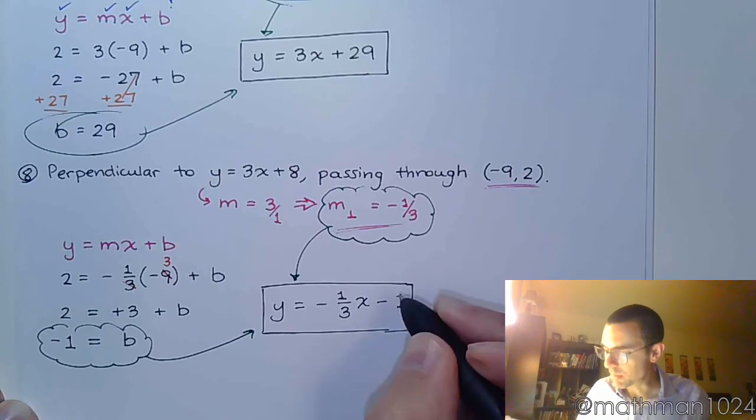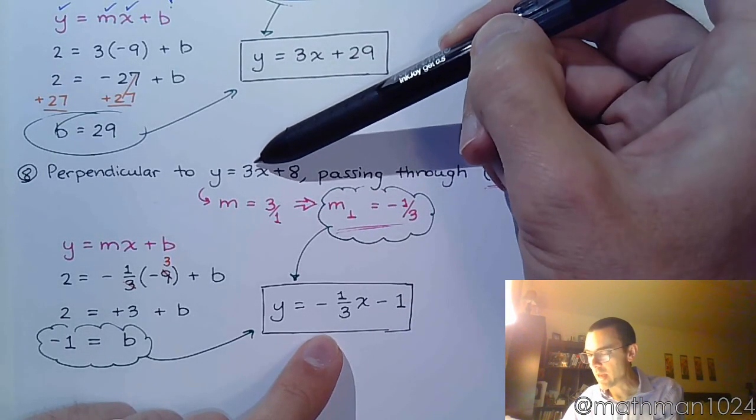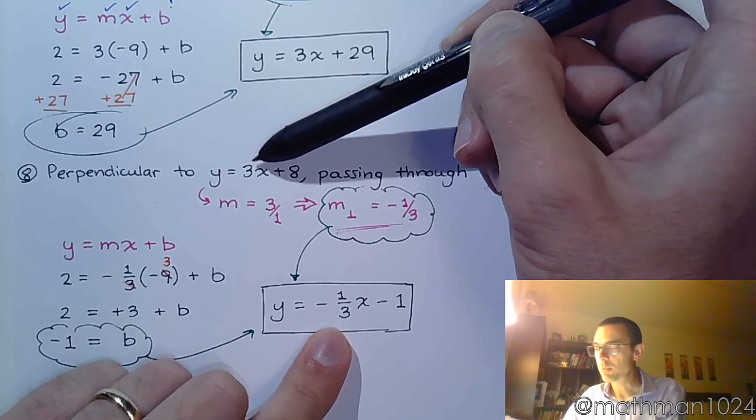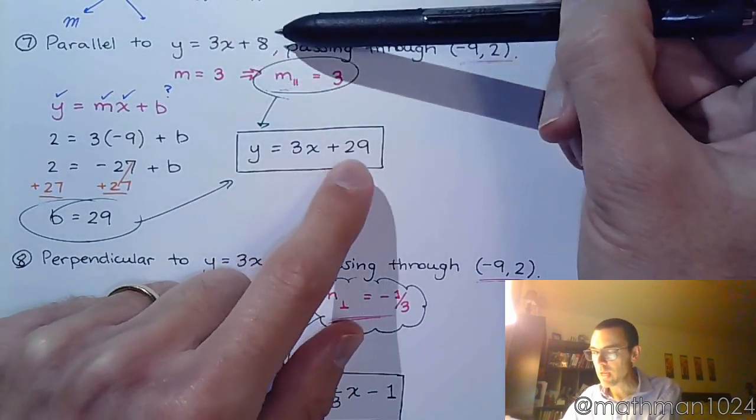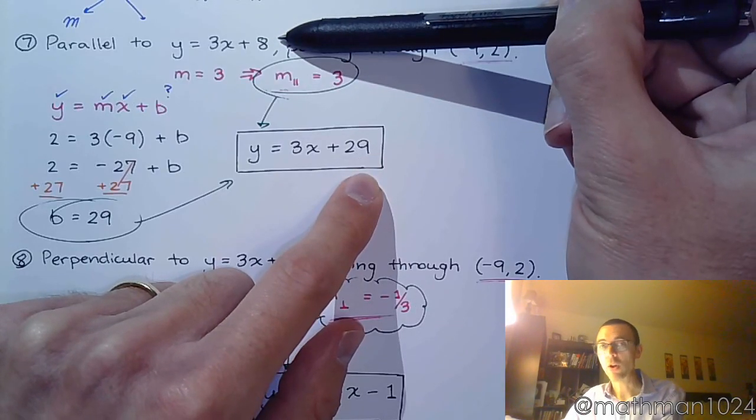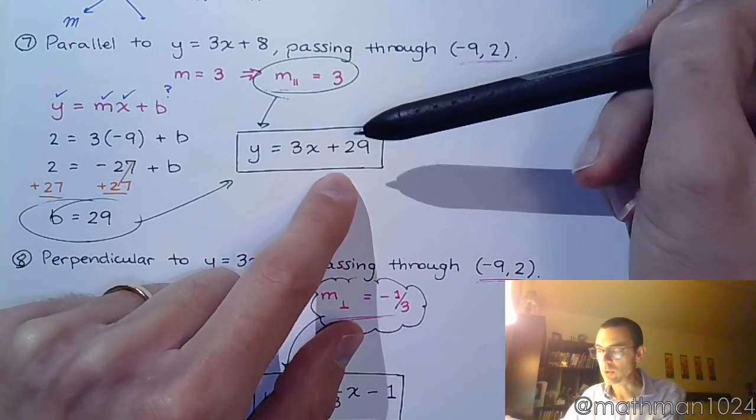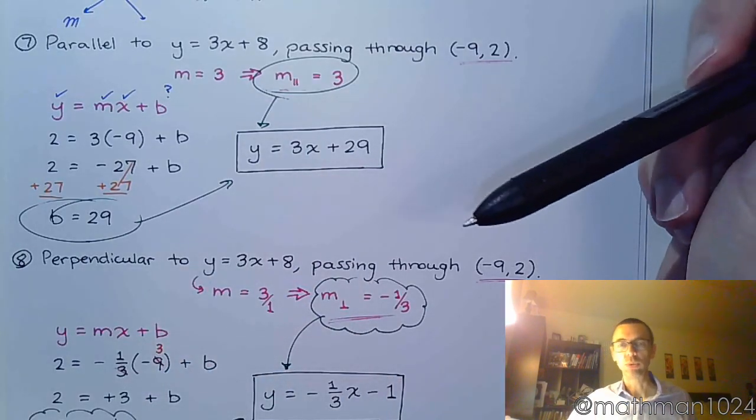And you can see a quick comparison between these two guys how they have negative reciprocals for slopes as opposed to the problem we had above where these guys have the exact same slope and they have different y-intercepts. So that means they are parallel. And since negative 9, 2 is going to be a solution here, that's what we're looking for.